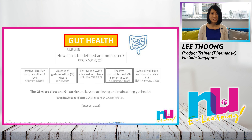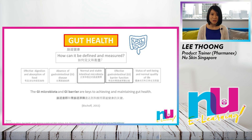According to researcher Bishop, five major criteria have been defined that might form the basis for a more objective definition of gut health, established by a scientific committee working on gut health issues. Gut health can be defined as: how effective digestion and absorption of food is; the absence of gastrointestinal (GI) diseases; normal and stable intestinal microbiota; effective GI barrier function; and the status of well-being and normal quality of life.